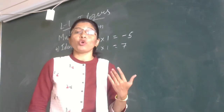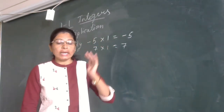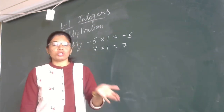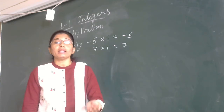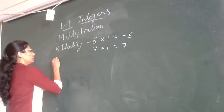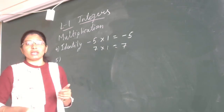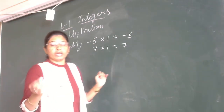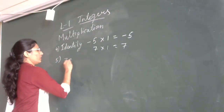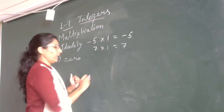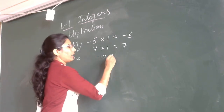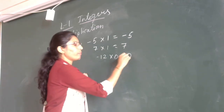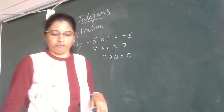Next is zero property. Zero property means when any integer — whether positive or negative — is multiplied with zero, we will get the product zero. These properties are the same as the whole number or natural number properties of multiplication. So zero property: any integer multiplied with zero gives the product zero.